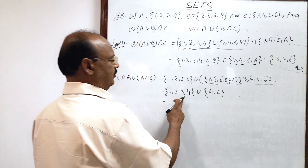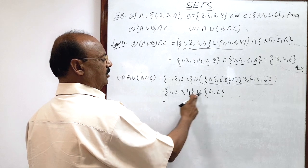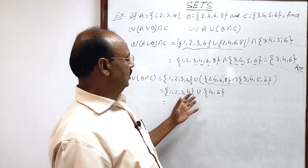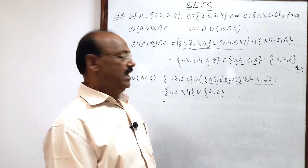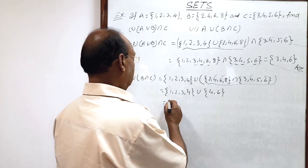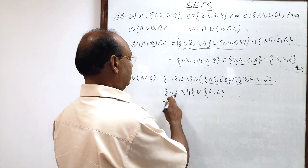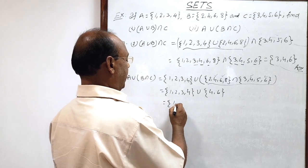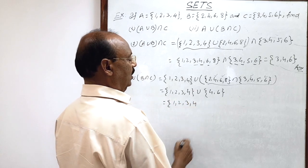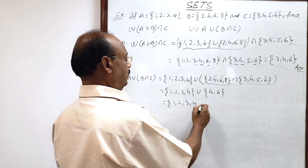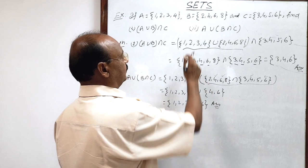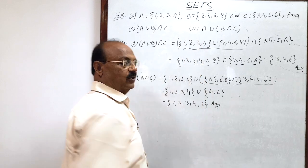Now we have to operate union over the two sets: A = {1, 2, 3, 4} and B∩C = {4, 6}. To find the union we collect all elements from both sets. So all elements are {1, 2, 3, 4, 6}. This is the answer for the second part of the question.